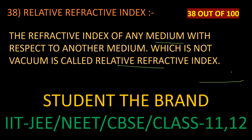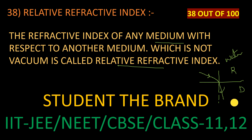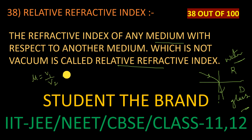When light is moving from rarer to denser, we can draw a normal line. Consider light moving like this — this is the water and this one is the glass. Any one of the mediums should not be vacuum, so here I am taking water and here I am taking glass.